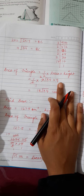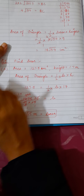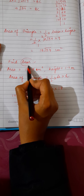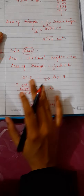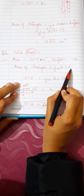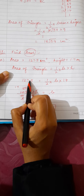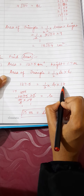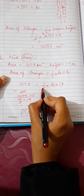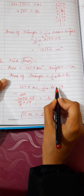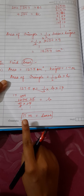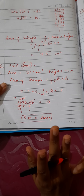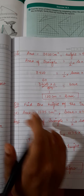Now question number three: you have to find the base given the area and height. Area of triangle = half × base × height. The area is 127.5 and the height is 17. Rearranging: base = (2 × 127.5) / 17. Cancelling gives the base as 15 meters.